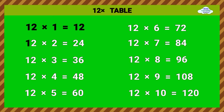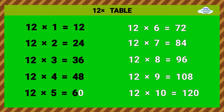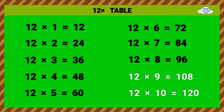12 times table. 12 times 1 equals 12. 12 times 2 equals 24. 12 times 3 equals 36. 12 times 4 equals 48. 12 times 5 equals 60. 12 times 6 equals 72. 12 times 7 equals 84. 12 times 8 equals 96. 12 times 9 equals 108.